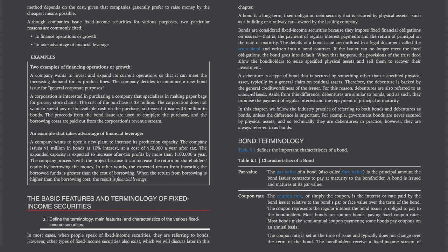The details of a bond issue are outlined in a legal document called the trust deed and written into a bond contract. If the issuer can no longer meet the fixed obligations, the bond goes into default. When that happens, the provisions of the trust deed allow bondholders to seize specified physical assets and sell them to recover their investment. A debenture is a type of bond secured by something other than a specified physical asset — typically by a general claim on residual assets — and is backed by the general creditworthiness of the issuer, also referred to as an unsecured bond.